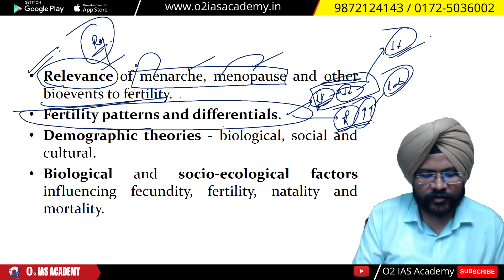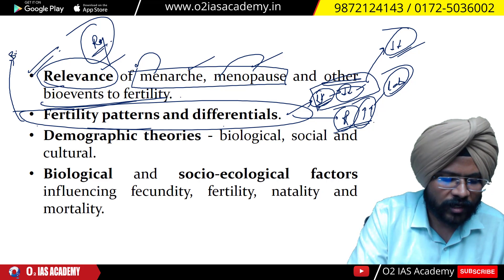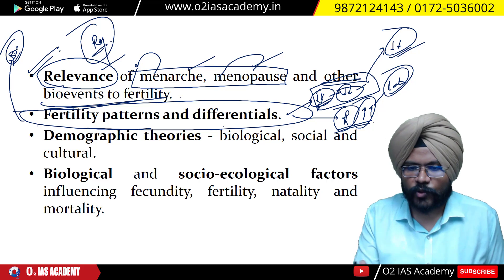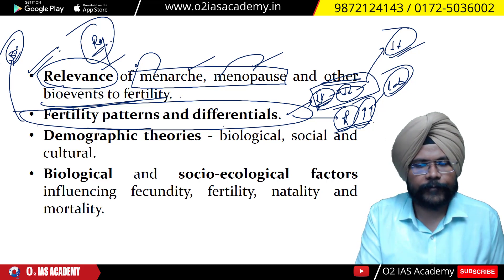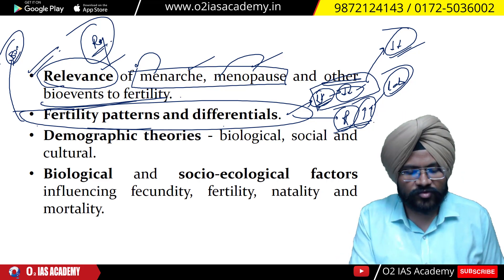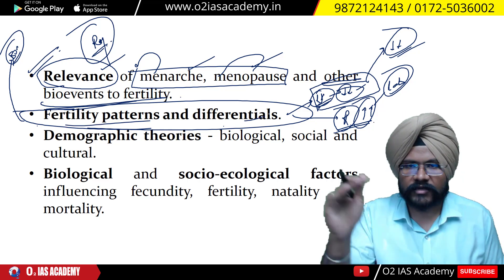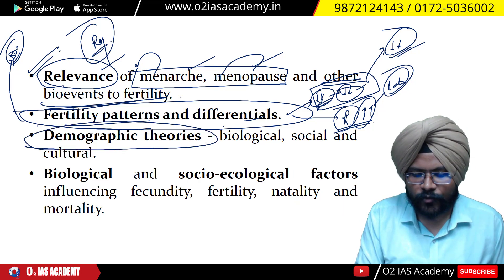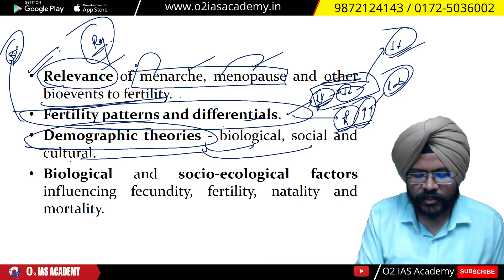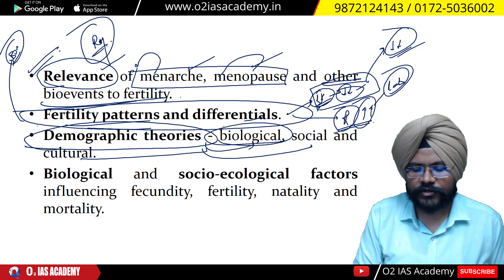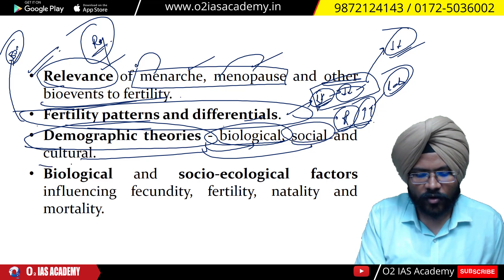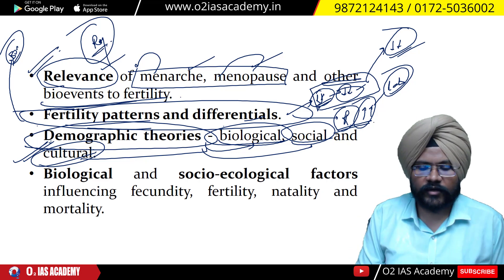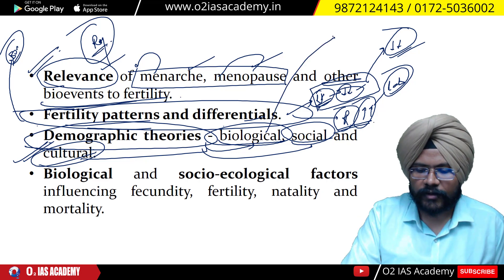These patterns and their factors have been studied by Bogaarts — an anthropologist whose approach is called the approach of proximate determinants. Through this, fertility patterns worldwide are studied. Then you have demographic theories, divided into three parts: biological factors, social factors, and cultural factors.